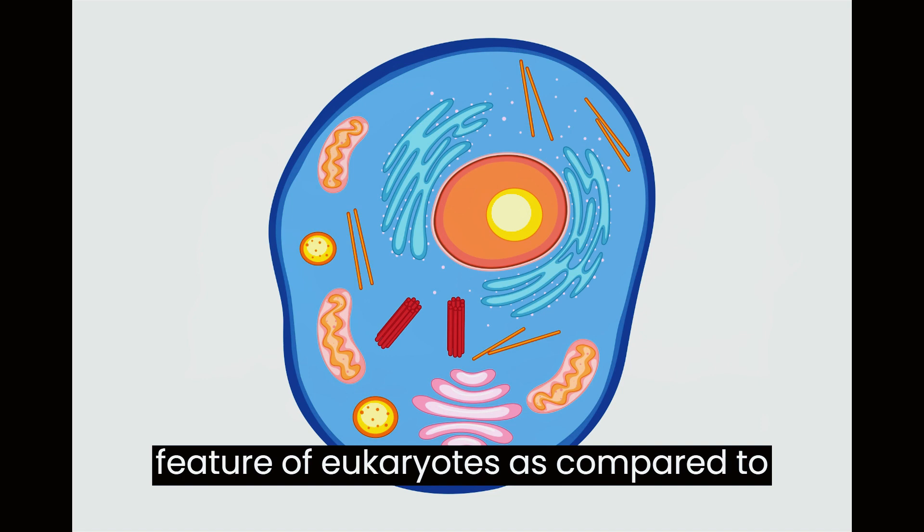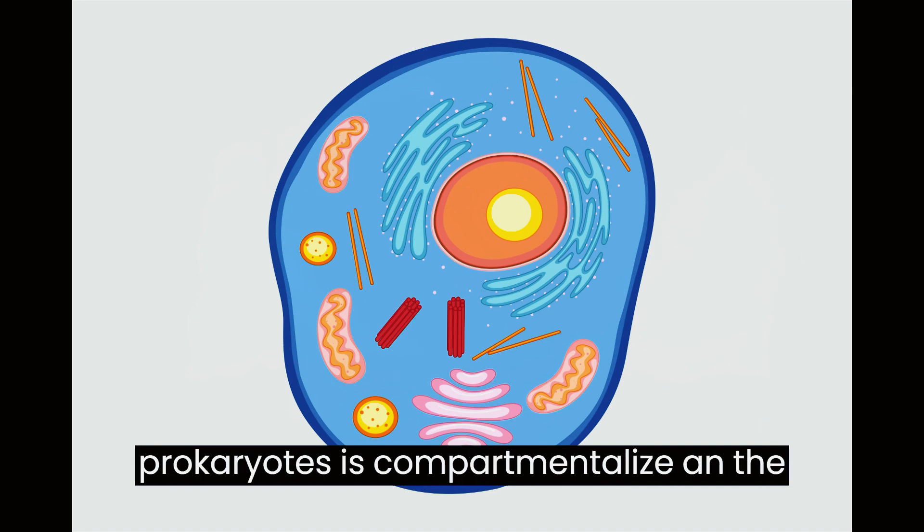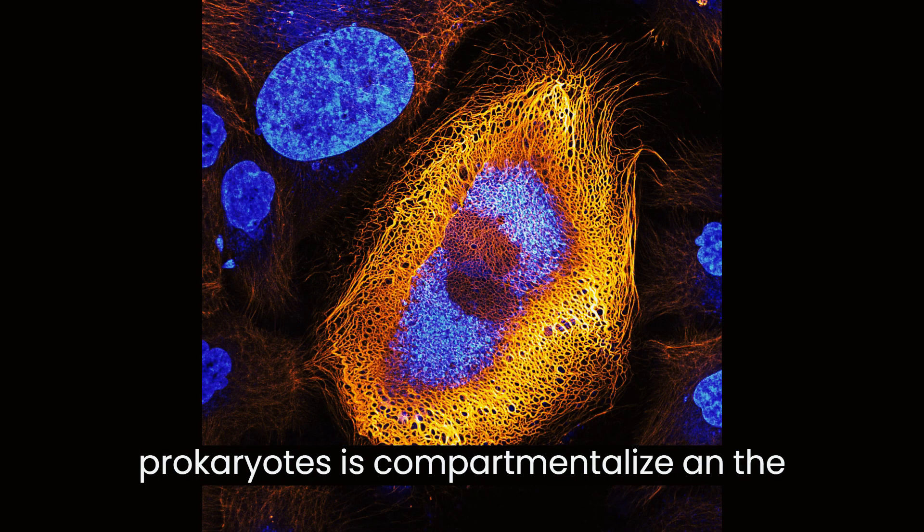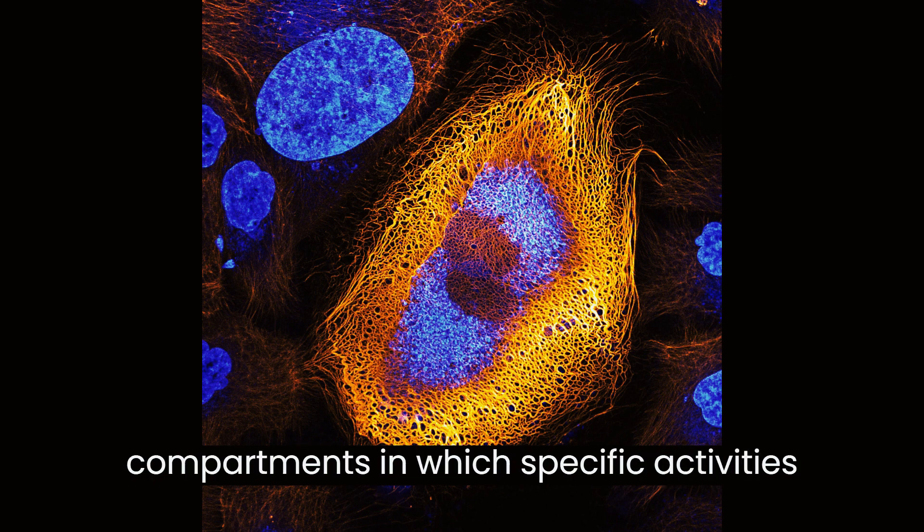The main distinguishing feature of eukaryotes as compared to prokaryotes is compartmentalization, the presence of membrane-bound organelles, compartments in which specific activities take place.